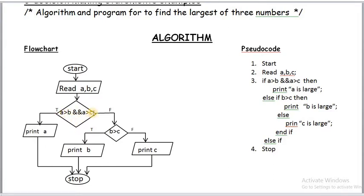If this condition is true — meaning A is greater than B and also C — then at the rhombus two paths are followed: one for true, one for false. If it is true, we get the A value because A is the largest element.